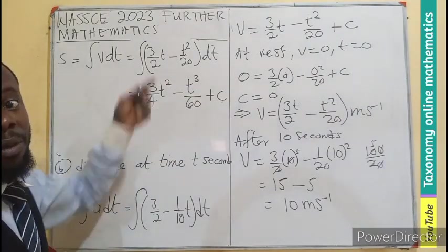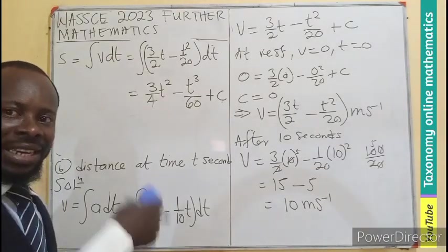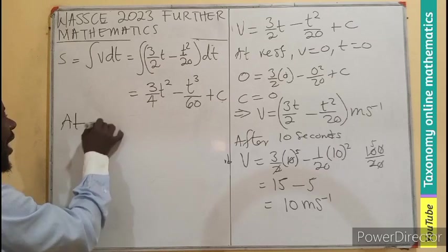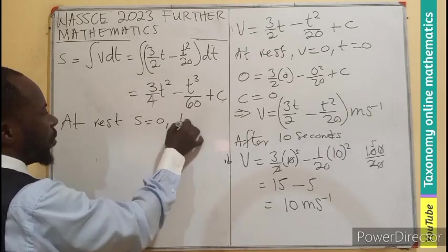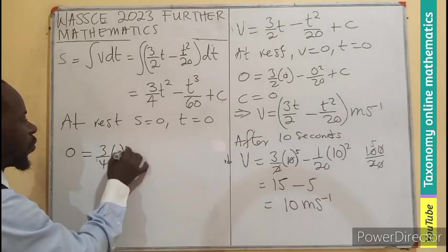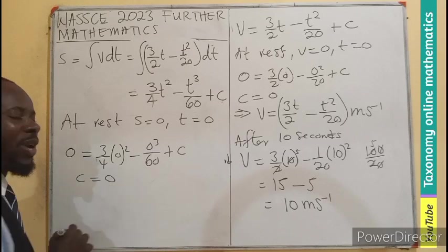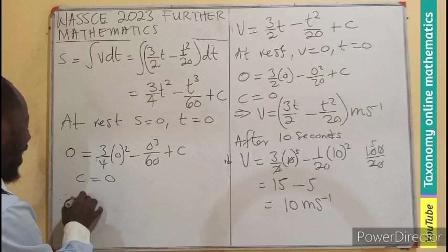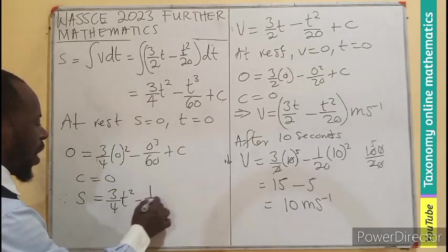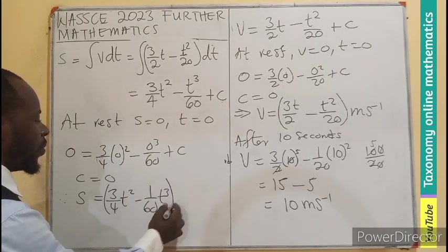But the body or the lorry was moving from rest. So when we are at rest, we have not moved any distance and we haven't moved any time. So it means the distance and the time in this case also will be 0. So at rest, your distance will be 0, your time will be 0. So here, your 0 will be equal to 3 on 4, 0 squared, 0 to the power 3, 60 plus c. That makes your c to be equal to 0. So therefore, the distance will be equal to 3 on 4 t squared minus 1 on 60 t to the power 3 plus 0, which will not make any difference. So this becomes meters.